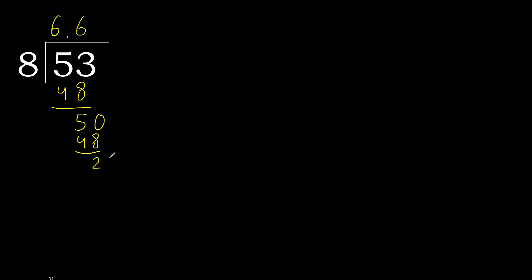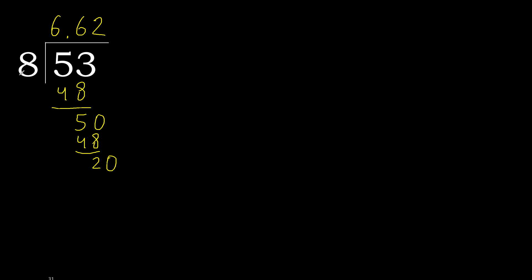There is no next number, therefore complete. Always complete with 0, complete point. 20: 8 multiplied by 3 is greater. Multiplied by 2 is 16. Subtract: 20 minus 16 is 4, complete.